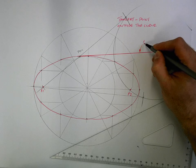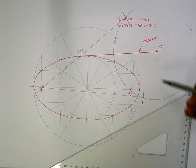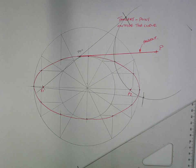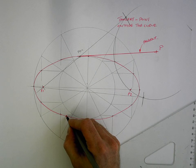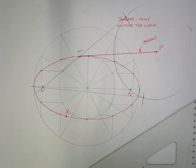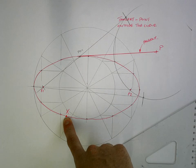Alright, so we're all clear on that. That's for a point outside the curve. The other type of tangent that can come up is if you're given a point on the curve. So what I'll do is I'll go to the bottom here and I'll just mark off a random point and we call it point X. So what I have to do is I have to draw a tangent to my ellipse that's in contact with point X.